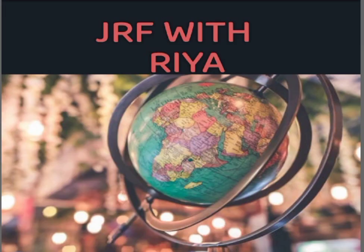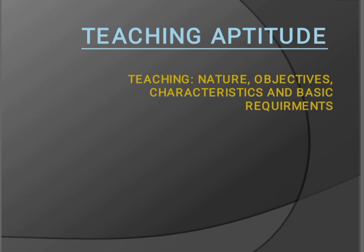Hello students, welcome to JRF with Ria. Today is the very first session of UGC NET Paper 1. The first unit of the Paper 1 syllabus is Teaching Aptitude, which has some sub-units. Today we will focus on the nature, objectives, characteristics, and basic requirements of teaching.